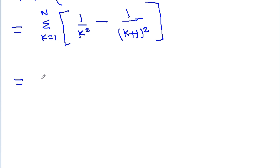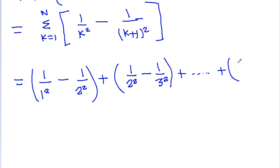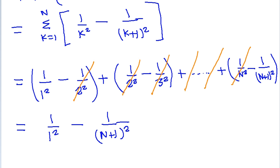Expanding the telescoping sum, terms cancel: 1/2² cancels, 1/3² cancels, and 1/n² also cancels. We are left with 1/1² minus 1/(n+1)², which simplifies to 1 − 1/(n+1)².